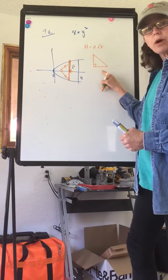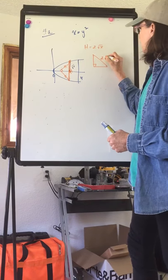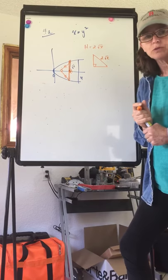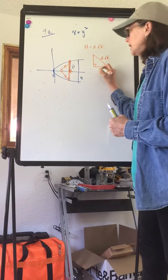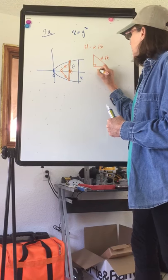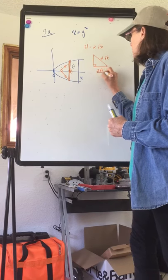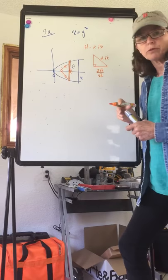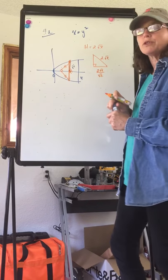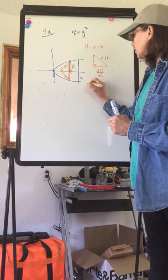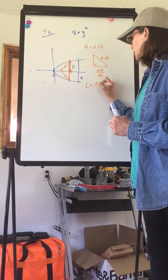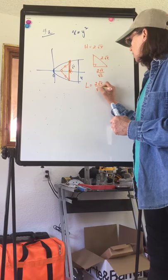But here we have this is 2 root x, so to go from hypotenuse to the leg, we're going to have to divide by the square root of 2 instead of multiply by square root of 2. This expression, I don't usually rationalize, I have leg is equal to 2 root x over root 2.